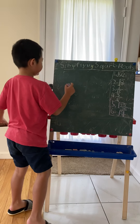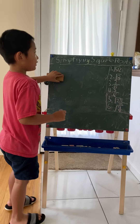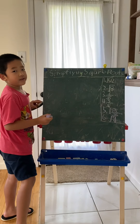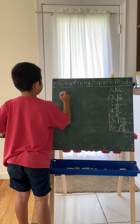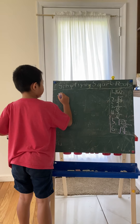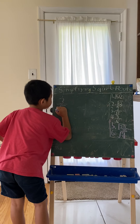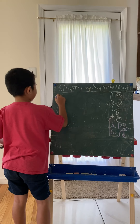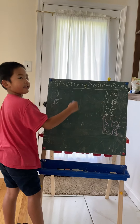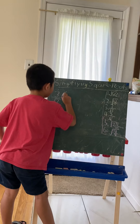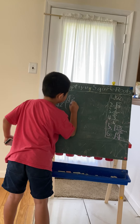Sometimes you may get an irrational in the denominator, like maybe 3 over the square root of 2. What can we do? The deal is to multiply by the square root of 2 over the square root of 2.